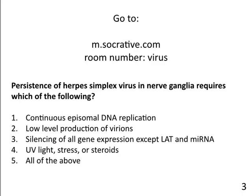Persistence of herpes simplex virus in nerve ganglia requires: silencing of all genes except LAT and microRNAs, no continuous replication (since neurons don't divide), and no low-level production of virions. UV light stress is not required for persistence—that's what triggers reactivation. So the correct answer is number three: silencing of all genes except LAT and microRNAs.